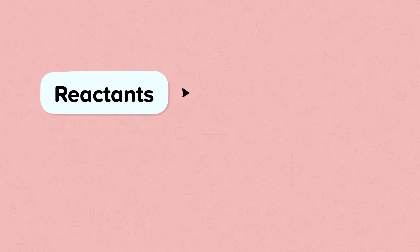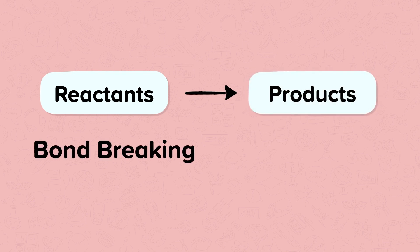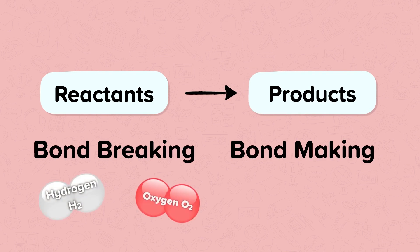During a chemical reaction, bonds in reactants are broken and new bonds are made in products. For example, the bonds in hydrogen and oxygen break to form water.